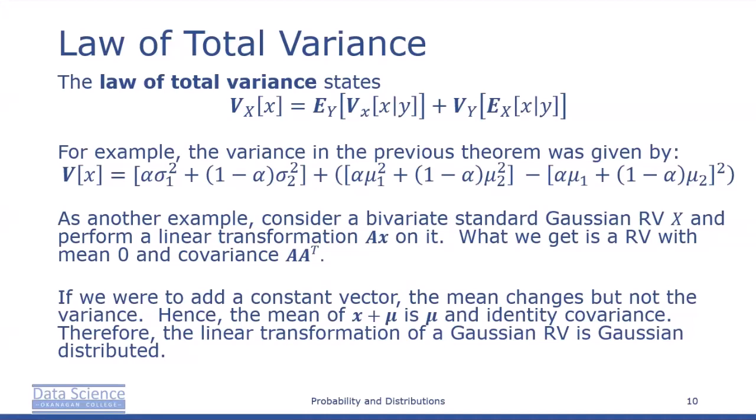For a mixture density, the individual components can be considered to be conditional distributions conditioned on the component identity. The equation for variance we saw is an example of the conditional variance formula, also known as the law of total variance, which states that for two random variables x and y, the variance of x equals the expected value of the variance of x given y, plus the variance of the expected value of x given y. That is, the total variance of x is the expected conditional variance plus the variance of the conditional mean.